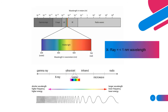In photolithography, UV light is used to transfer the pattern. In X-ray lithography, we use X-ray to transfer the pattern on the photoresist. X-ray has a shorter wavelength compared to UV, which is less than 1 nanometer. So the wavelength distance is shorter compared to the UV one.